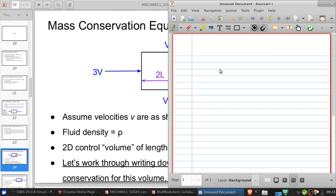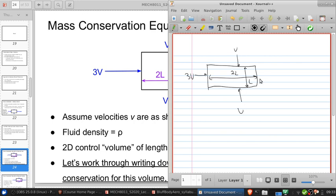So let's just redraw the problem. This is length 2L, this is length L. Here we have 3V, V, V. And then the question is, what is V right?